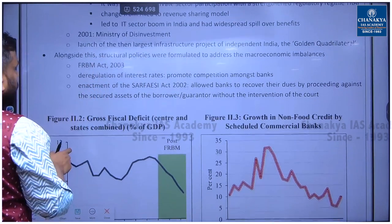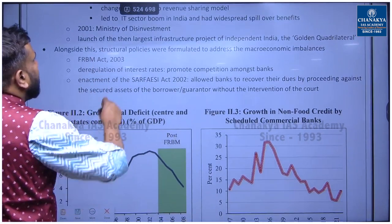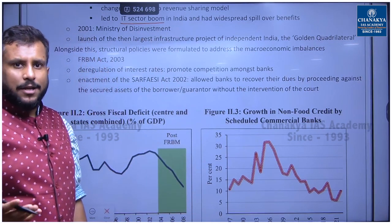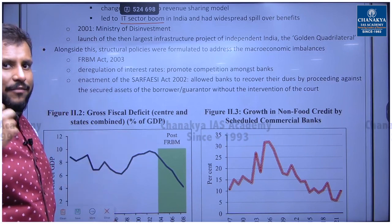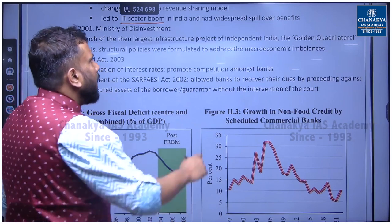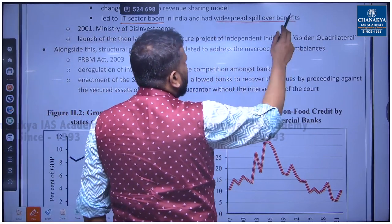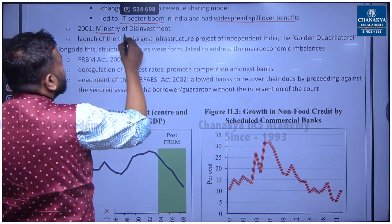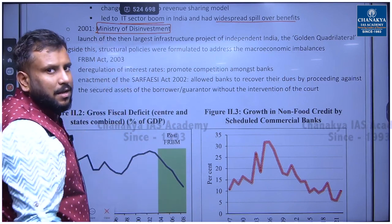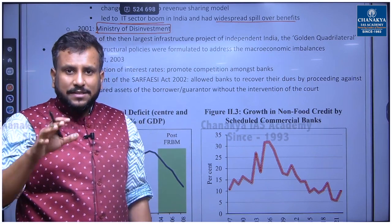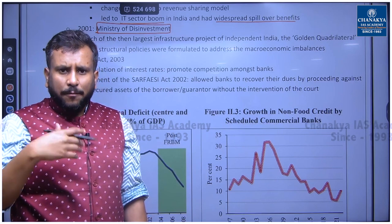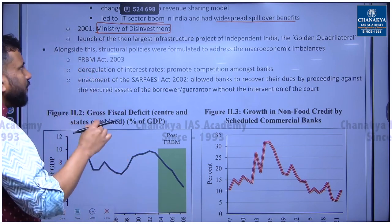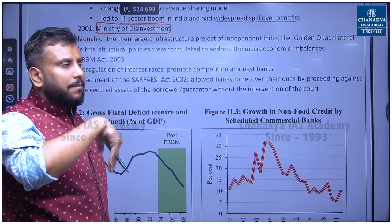The telecom reforms led to widespread spillover benefits, including the IT sector boom — Infosys, Wipro all emerged in this era. In 2001, the Ministry of Disinvestment was created, upgraded from the Department of Disinvestment, showing the government was serious about disinvestment — including disinvesting stake in Maruti Suzuki. The golden quadrilateral infrastructure project was also launched, connecting Delhi, Kolkata, Chennai, and Mumbai — the last great infrastructure project of independent India at that time.